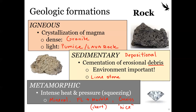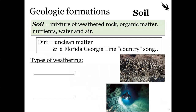Soil is actually the mixture of weathered rock with organic matter, water, and air. Geotechnical engineers call it soil, not dirt. Understanding how the rock was formed, how it was weathered into finer particles, and what it's mixed with is essential. There are two main types of weathering that get us from rock form to soil form: physical and chemical.